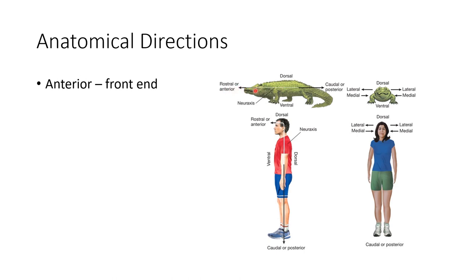Anterior is toward the front. We can see anterior is going toward the front of the animal — both for the alligator and for the person. Posterior is the opposite direction, toward the tail end. For the alligator, that's toward the tail; for the person, toward the feet.